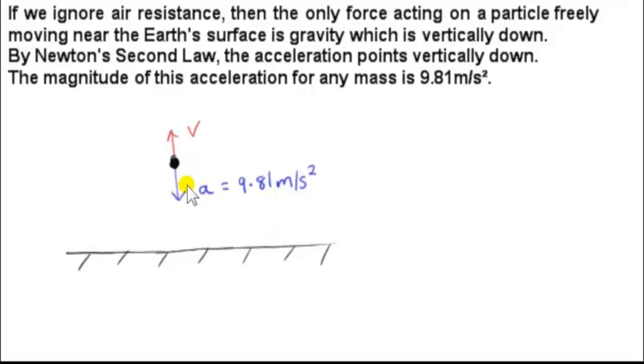In particular, that tells us that if we drop two objects of different masses, suppose we drop them so that this velocity now is zero and both of these objects are at rest. Well, both objects, since they're freely moving, are acted on by Earth's gravity, so the force is vertically down. Hence, by Newton's second law, the acceleration is vertically down. But the fact is that the acceleration is actually the same.